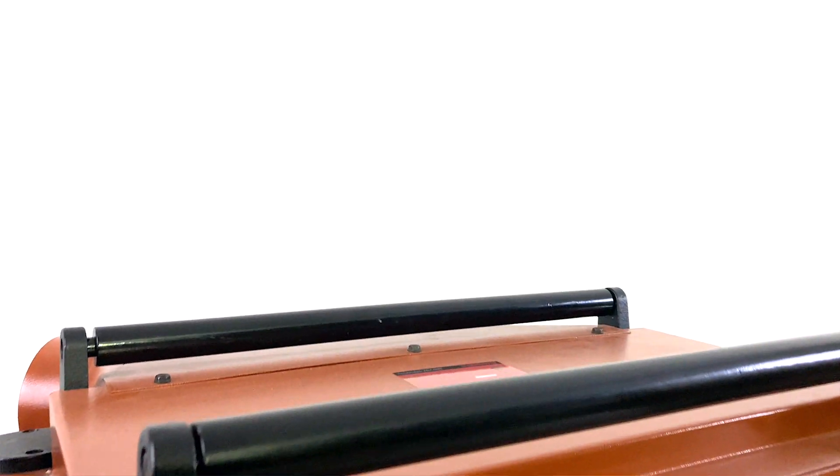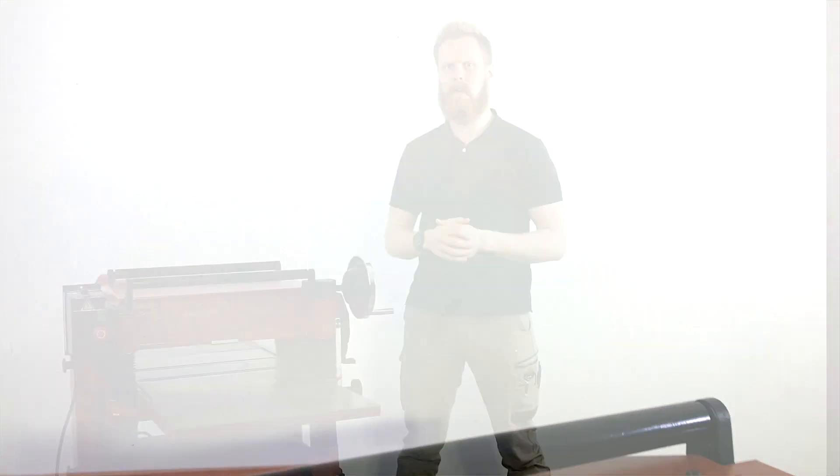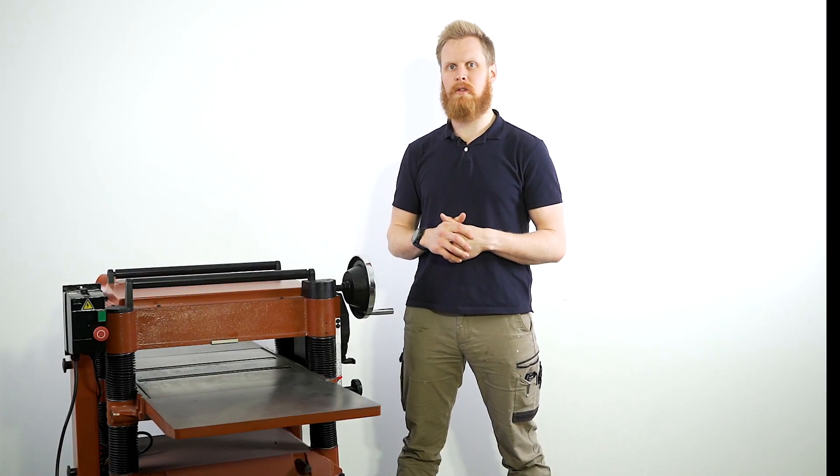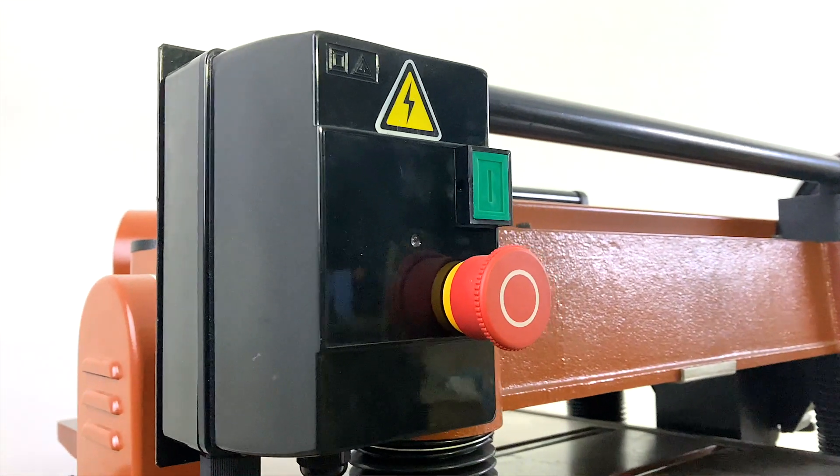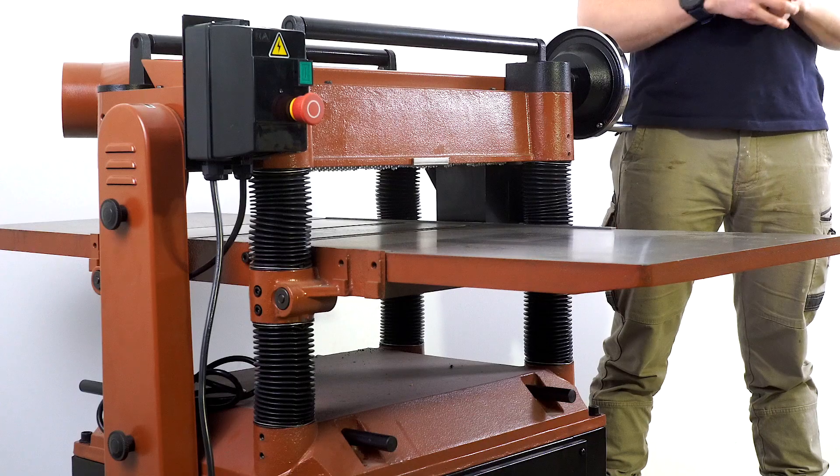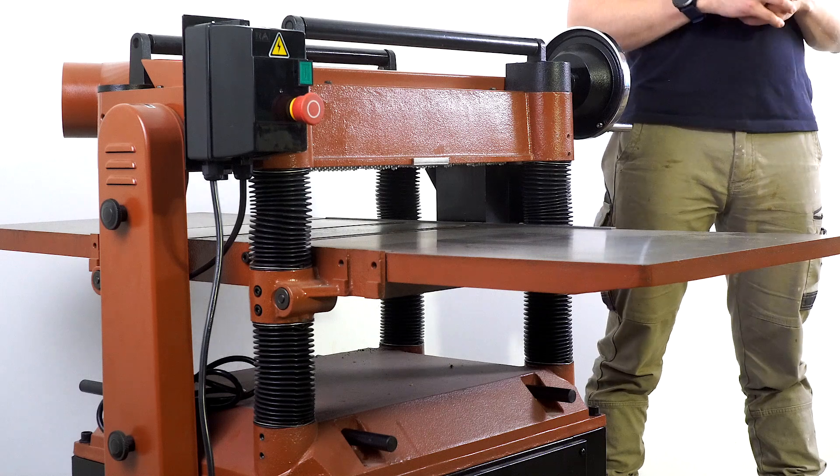It's got some heavy-duty roller bars on top for when you're feeding stuff out and passing it back over, and a very large, very easy-to-reach red stop button. And just like every other industrial thicknesser that we sell, even the 20-inch comes with the mobility carry bars.